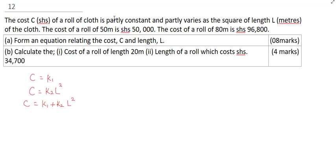Having established this, the question says at L equal to 50 meters, C is 50,000. So we're going to build the relationship for that equation, and that means 50,000 will be equal to K1 plus K2 times 50 squared. So 50,000 equals K1 plus 2,500 K2. We're going to call this our equation 1.